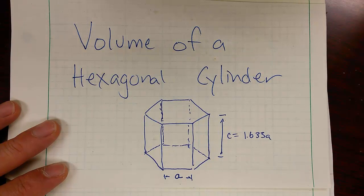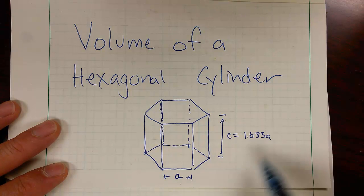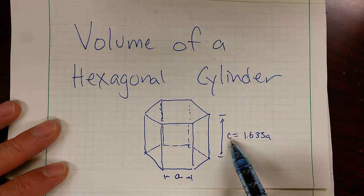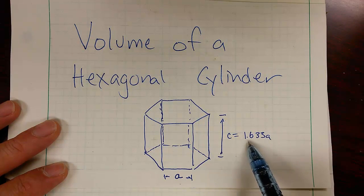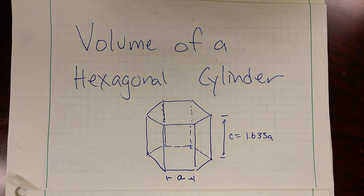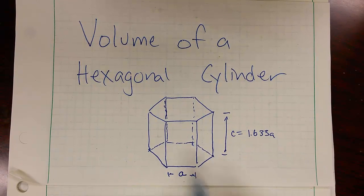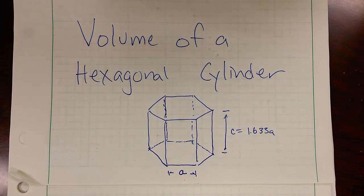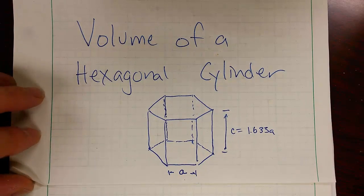In this particular example, the cylinder has a side length a and a height c, and I'm saying that this particular cylinder has a relationship between c and a, as shown right here: c is 1.633 times a. That is the ideal height to base length dimension for a hexagonal closed packed crystal structure.